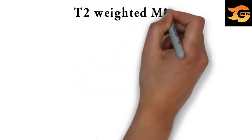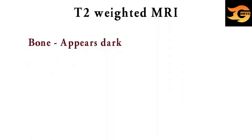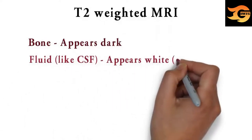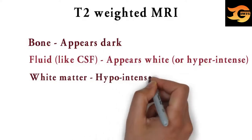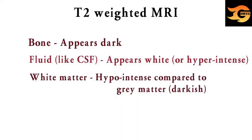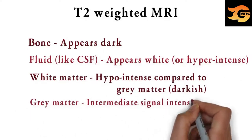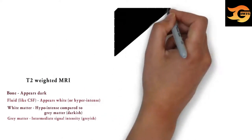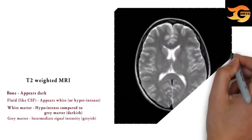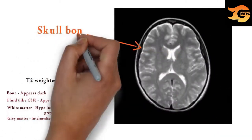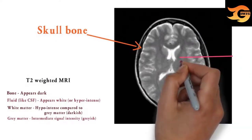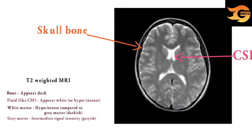Then T2 weighted MRI. In T2 weighted MRI, bone appears dark, fluid like CSF appears white, white matter appears darkish compared to grey matter, and grey matter appears grayish. This is T2 weighted MRI in which skull bone is appearing dark, CSF is appearing white, and white matter is appearing darkish compared to grey matter.